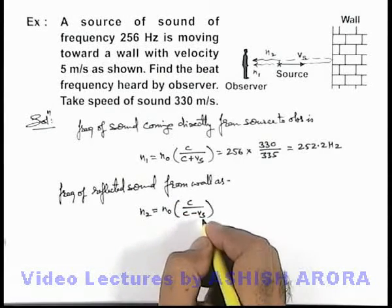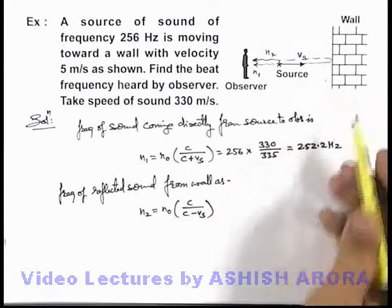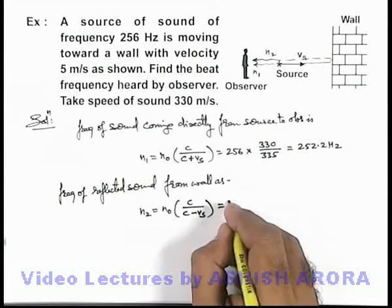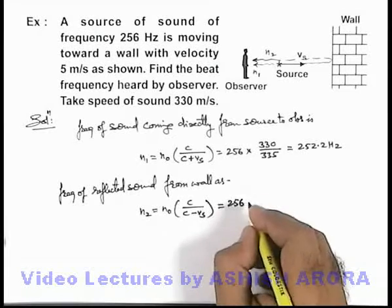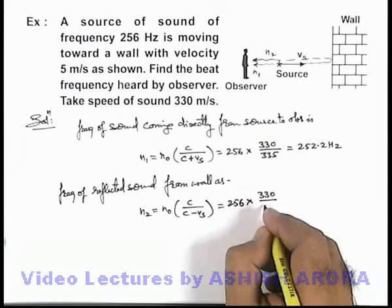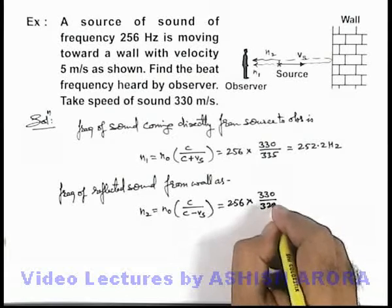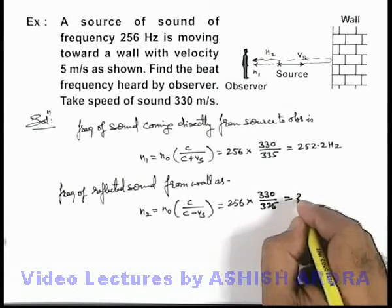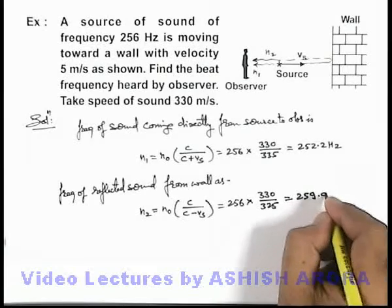Here we have taken minus vₛ because the source is approaching the observer, so frequency will increase. This will be, on substituting values, 256 multiplied by 330 divided by 325. On simplifying these calculations, we'll get the result to be 259.9 Hz.